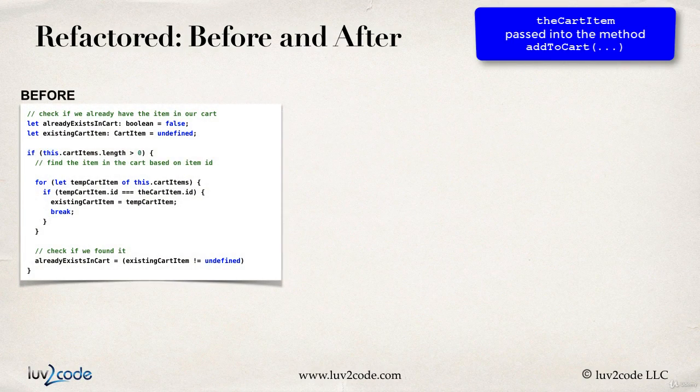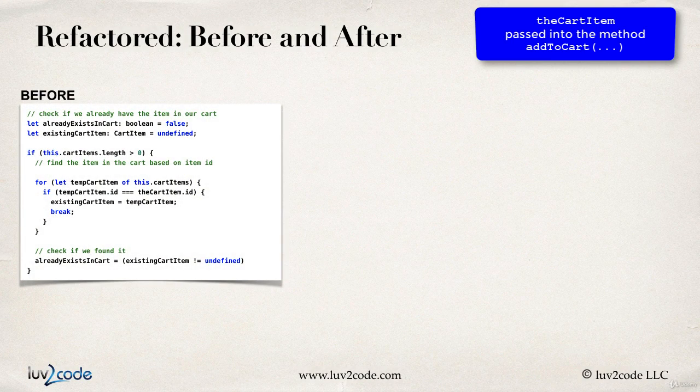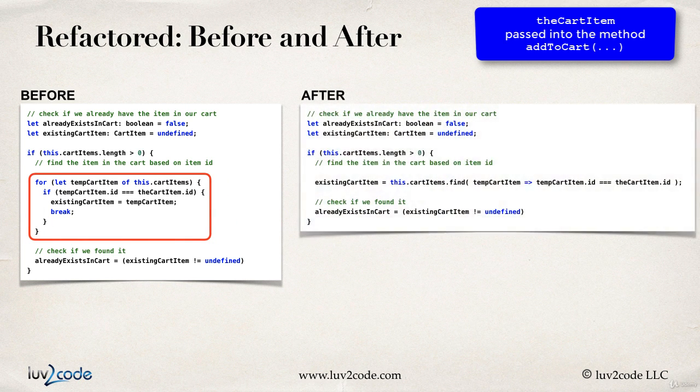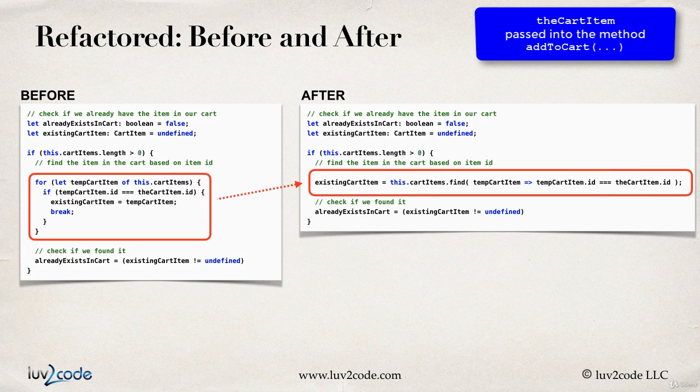So let's kind of pull it together here with the before and after. So on the left-hand side, we had the before code. So our basic way of doing a for loop. And then over on the right, we have our after code. So here we're going to make use of cartItems.find. So as you can see here, there's some improvement. We minimize the amount of code that we have to make use of and we're making use of some of the built-in methods available on arrays.